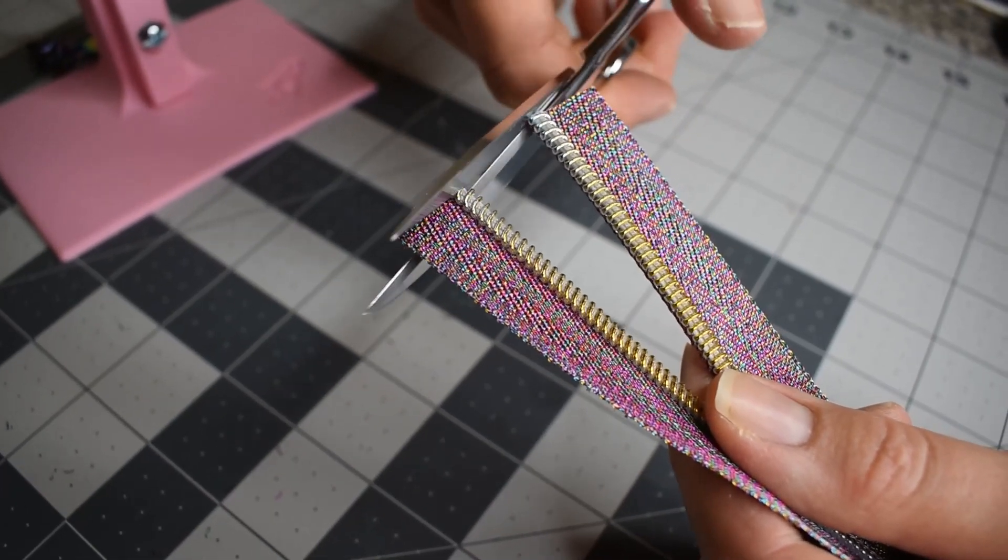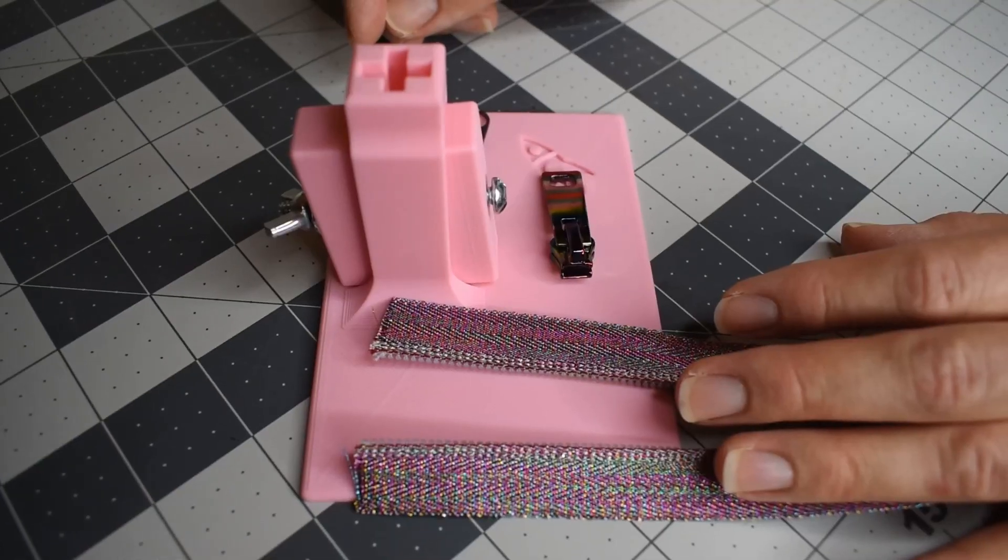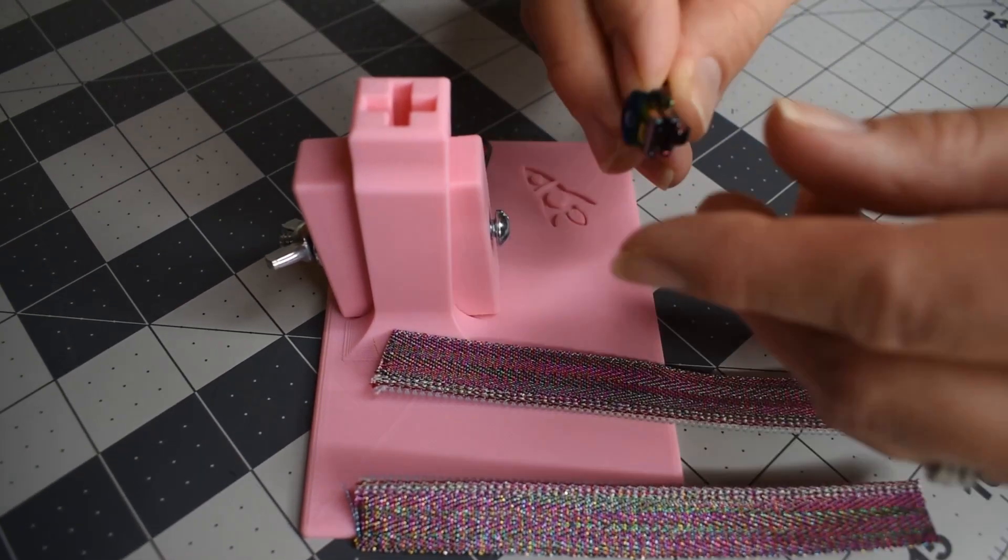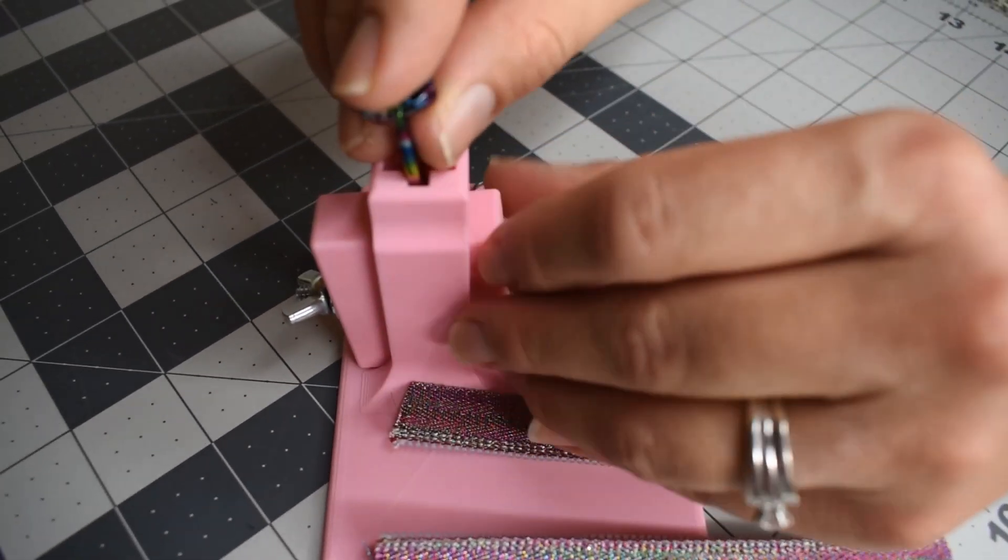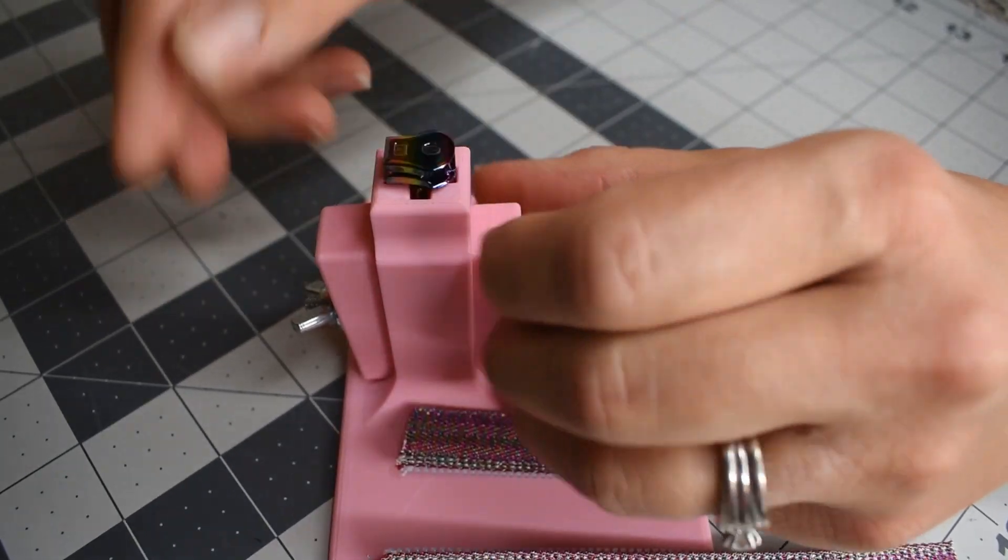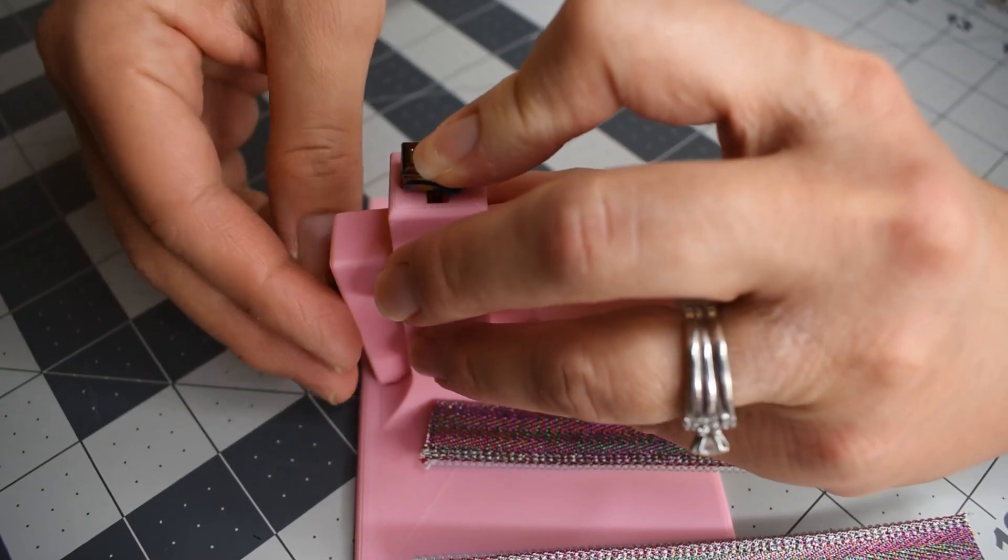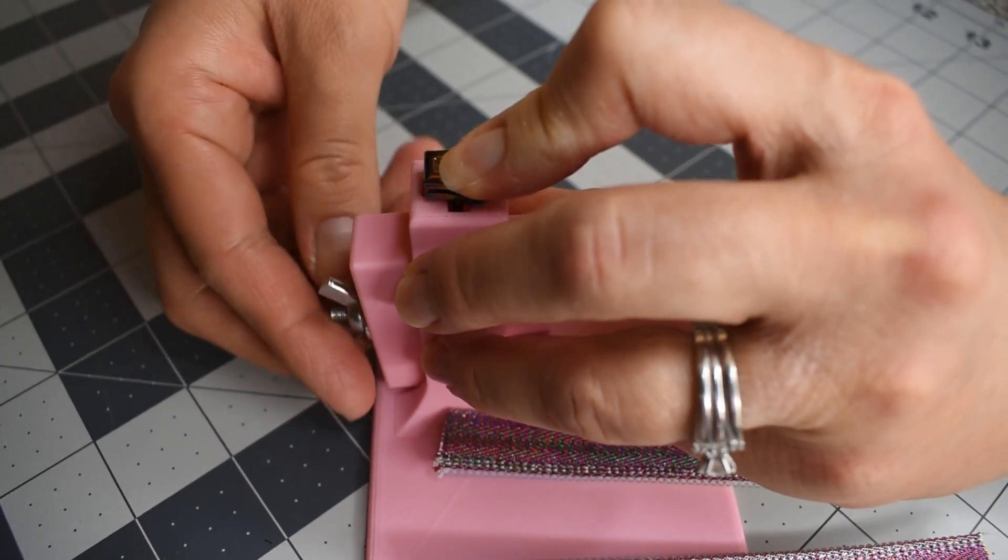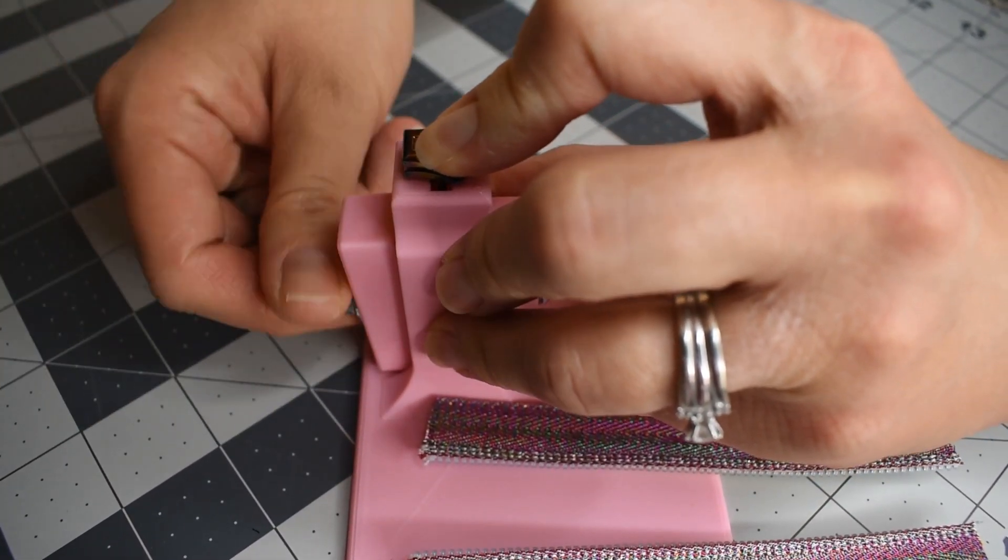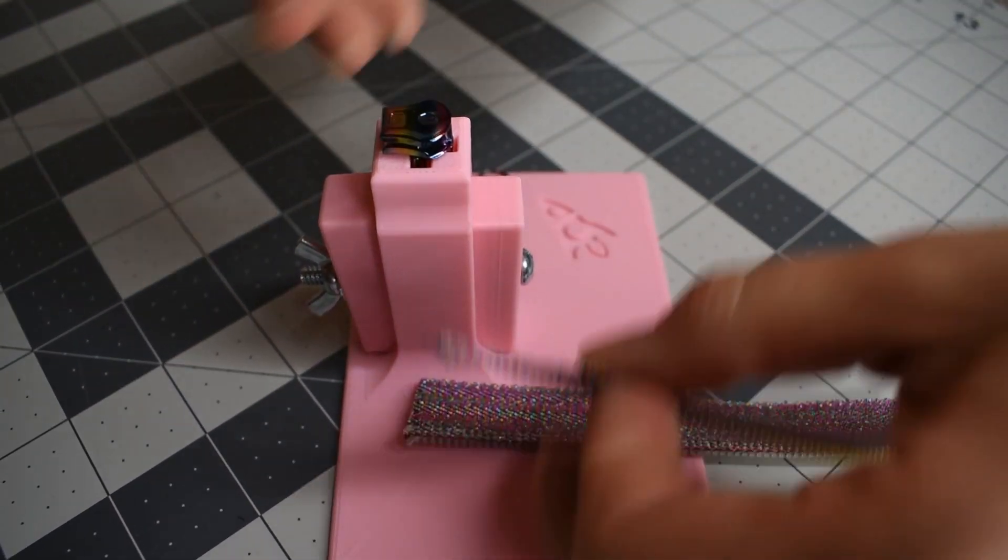You simply take the tab of your zipper and place it into the top slot, and you tighten it using the wing nut. You want to make sure that the part of the tab that you're going to insert the teeth into is opposite from the wing nut.